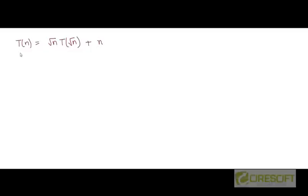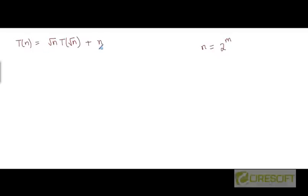It turns out that there was also a simpler way to solve this recurrence than the approach which we followed in the previous video. This simpler way does not exactly match the approach we followed, where we replaced n by 2 to the power m at the beginning and then converted the original recurrence into one for s of m, which turns out to be much simpler. We followed that approach for three different problems and it worked every single time. The approach described here is a relatively faster one but may not work for other recurrences — it works for this recurrence particularly because of the form of this recurrence.